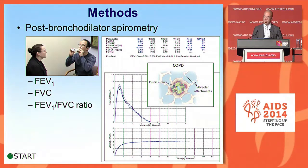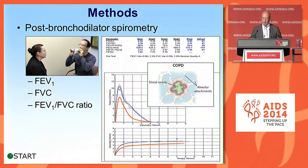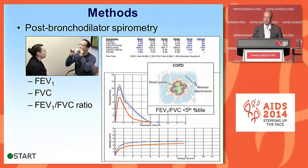Most of us should be able to exhale most of our air within the first one second of a forced effort. However, patients with COPD — because of emphysema, collapsible airways, inflammation and fibrosis — these airways are narrowed, and air exit from the lungs is delayed. This is expressed as an FEV1 to FVC ratio, and we define COPD for this cross-sectional analysis as a ratio below the fifth percentile as predicted by a predictive nomogram.